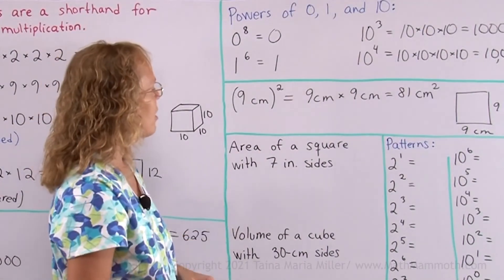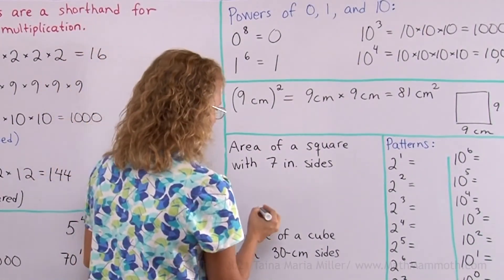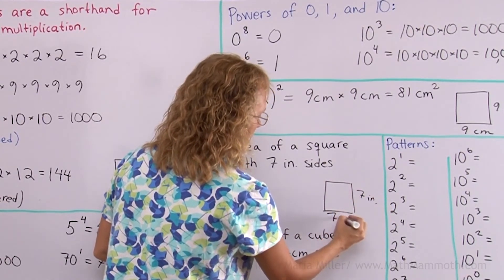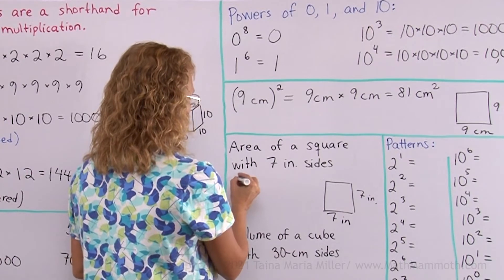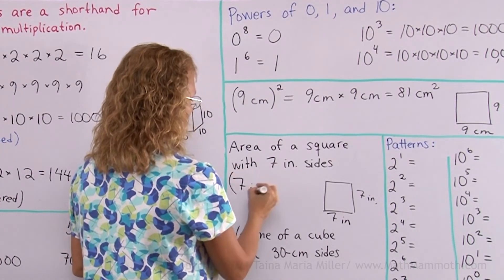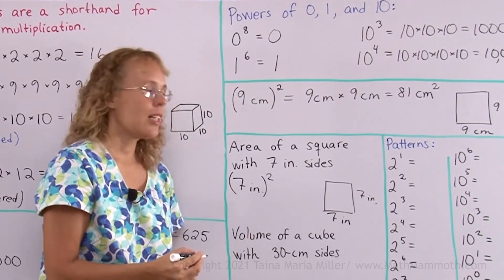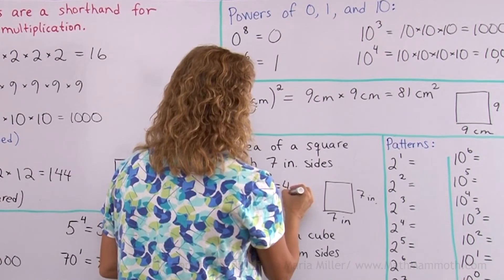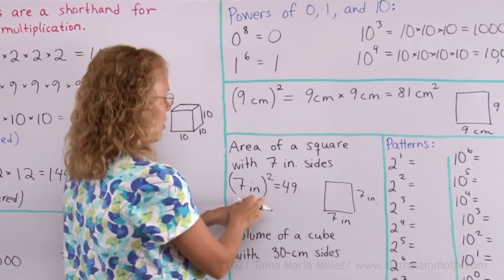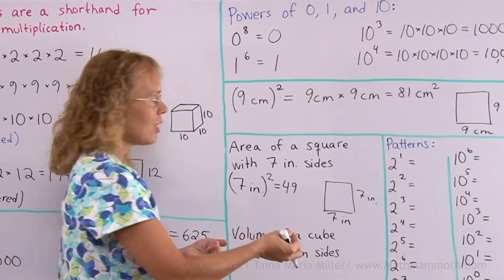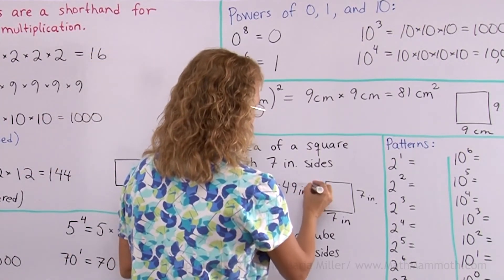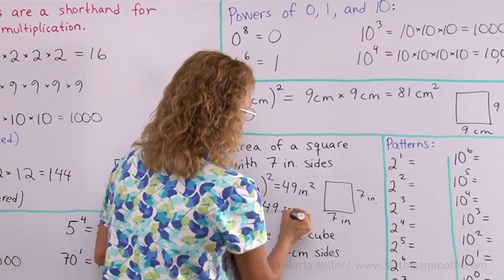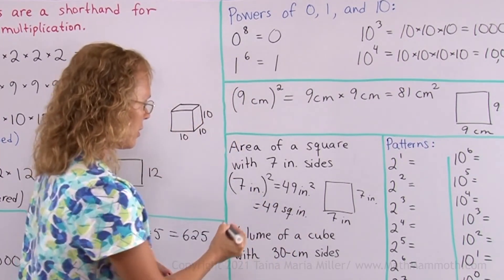Let's now figure out the area of a square with seven-inch sides. I'll sketch it here — seven inches and seven inches. I will write it like this: seven inches in parentheses, squared. That means the same as seven inches times seven inches, and I get 49. Then the inches get squared too — I get inches times inches, which is square inches. So it's 49 square inches. Some people write it as 49 sq in. Both ways are correct.